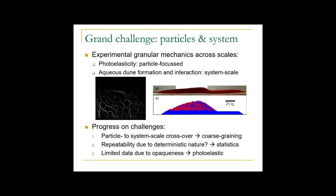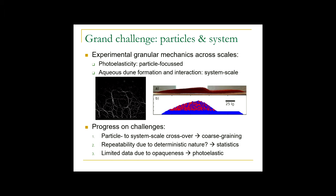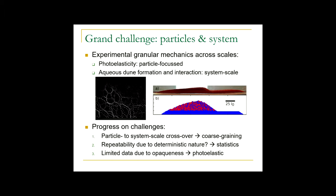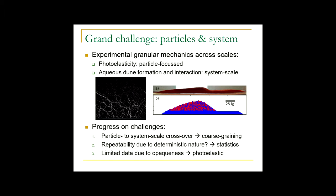Regarding the two different radii: my student Amalia is currently looking at segregation in this setup, but the experiments presented today use monodisperse spheres with only 10% size variation to avoid crystallization. The walls have 8mm spacing and the particles are 6mm, so they may bounce a little but are not constricted and flow freely down.